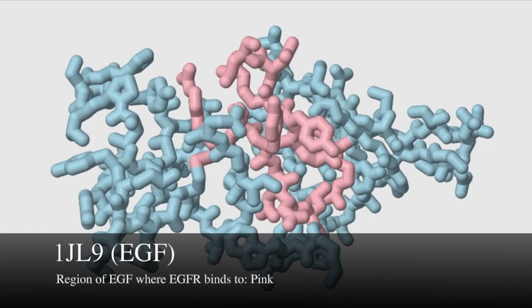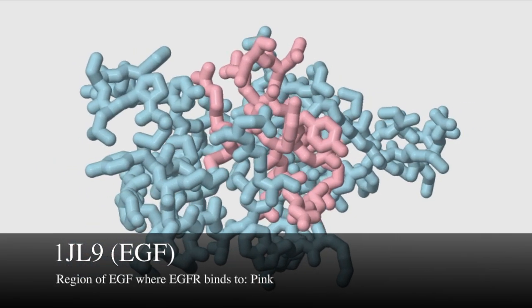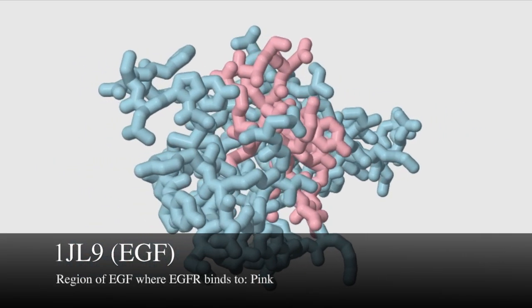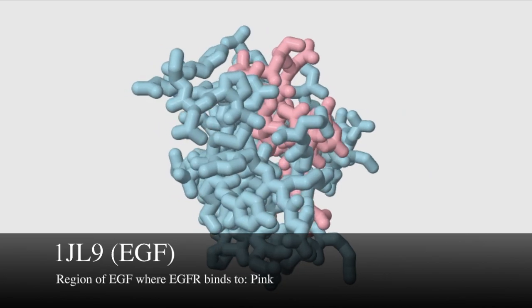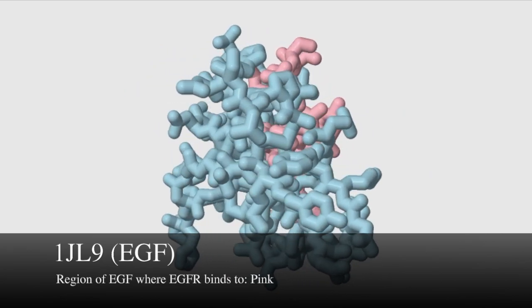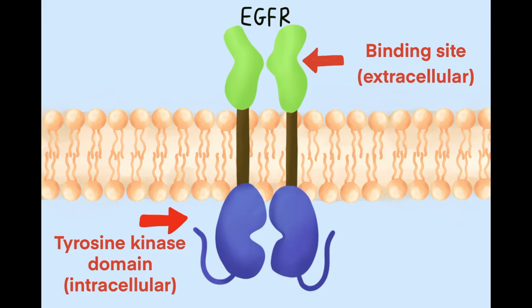The first protein of the EGFR/RAS pathway is EGF, which binds to EGFR. EGFR in its inactive state is made of two monomers, each with an extracellular EGF binding site and an intracellular tyrosine kinase domain.